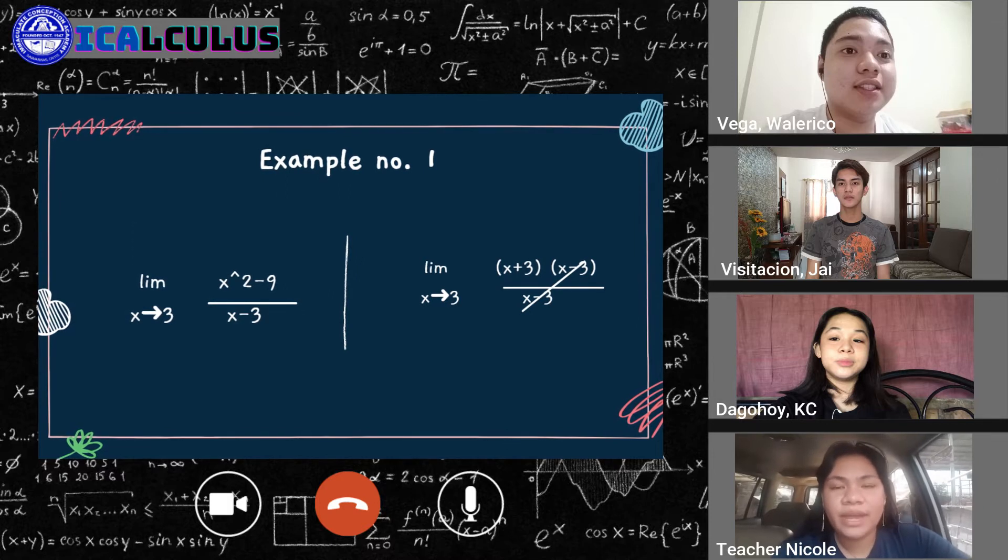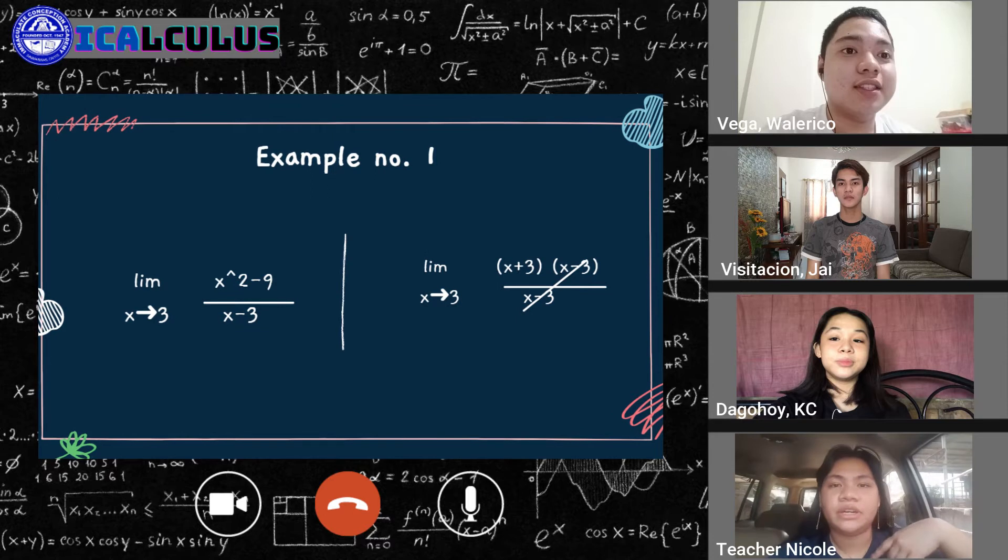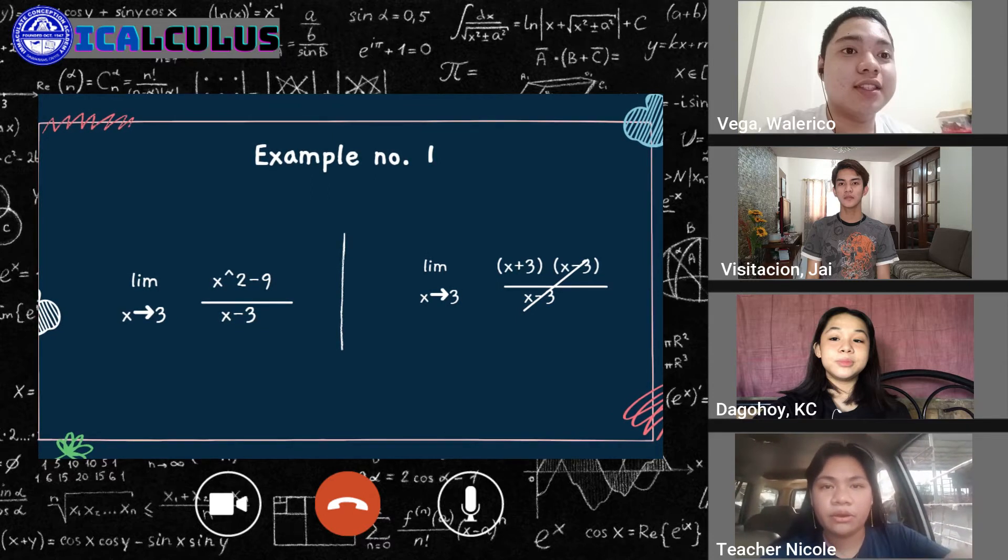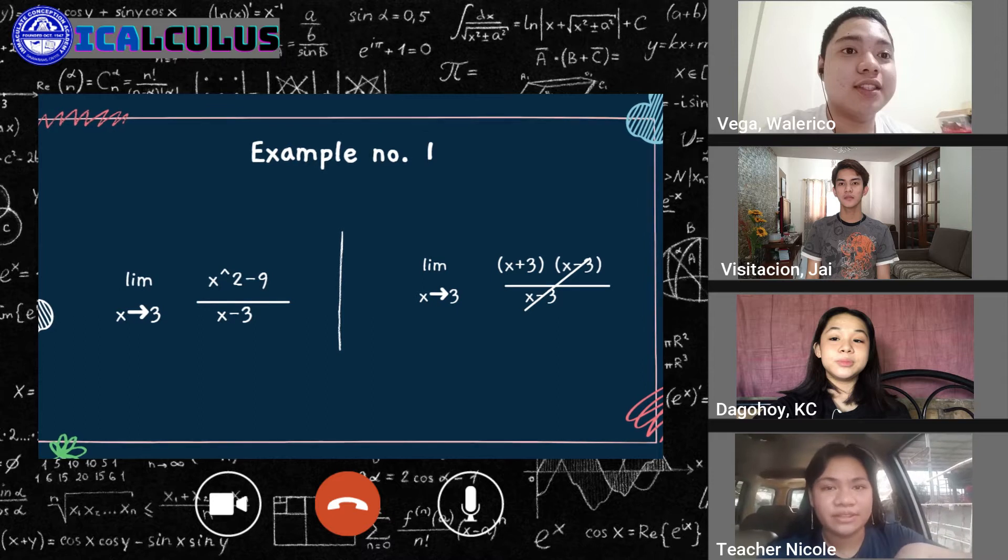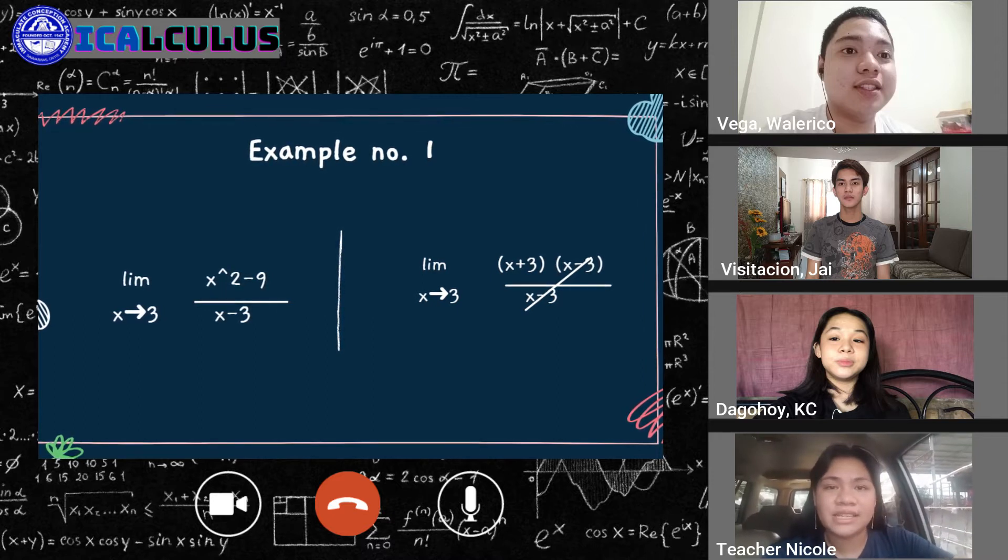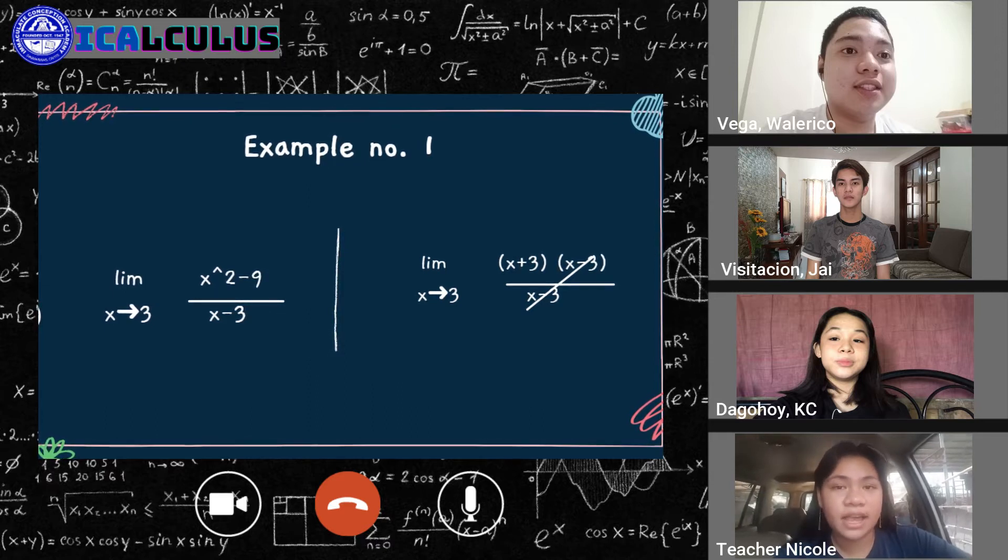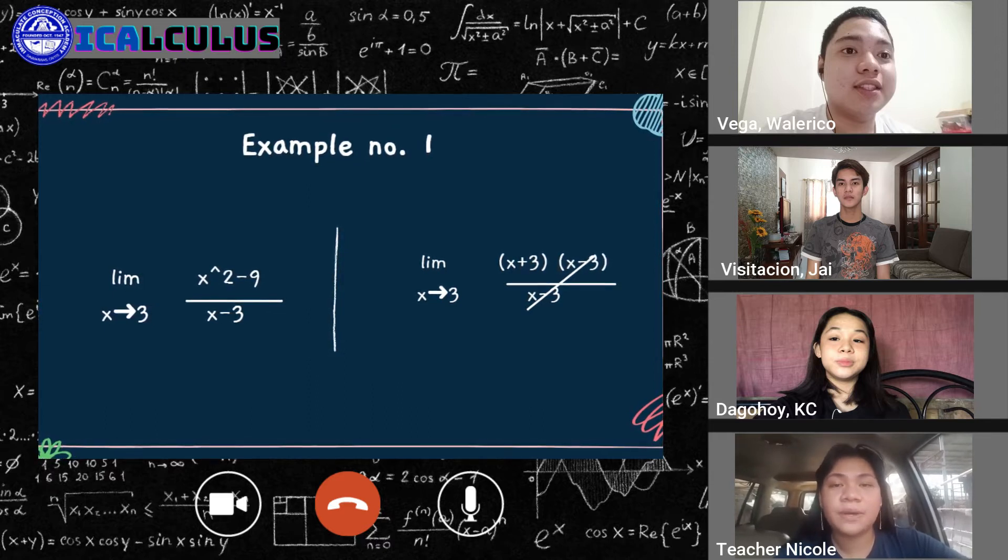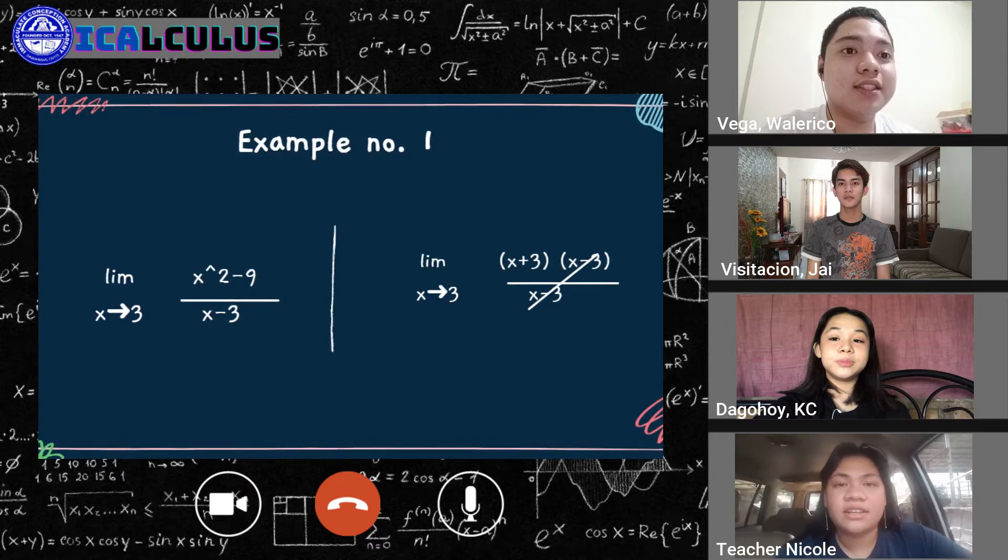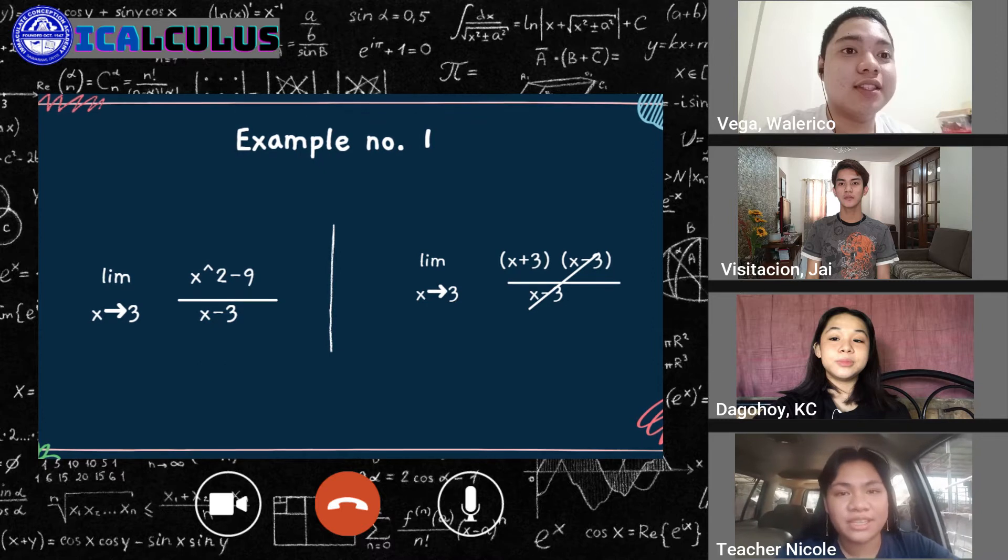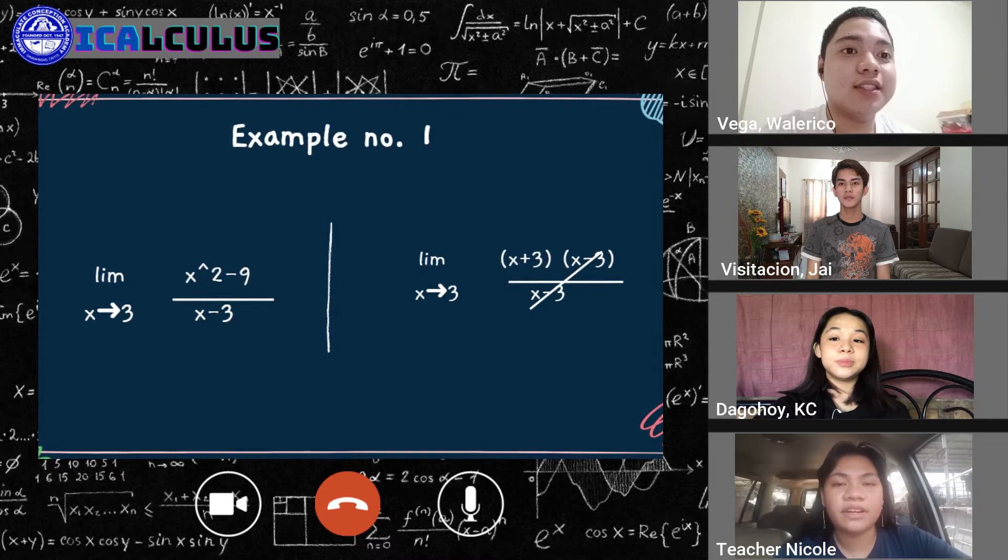So we have to now find a way to first simplify the given function before directly substituting x. And yes, there are many ways, but let us look first at our numerator. So if you will recall your grade 8 math, it is a difference of two squares. So that being said, we just have to extract the roots of x squared and 9, which is x and 3. Then let's use positive and negative since it is the difference of two squares.